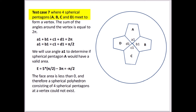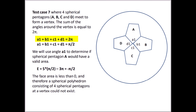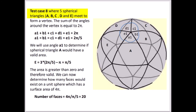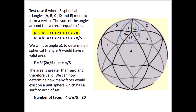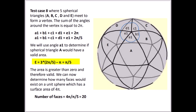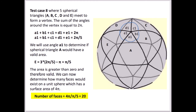For test case 7, four spherical pentagons meet at a vertex with angles summing to 2π, and the internal angle computes to π/2. The computed area of the spherical pentagon results in −π/2, indicating this is not a valid configuration. For test case 8, five spherical triangles meet at a vertex where the sum of the angles equals 2π, and the internal angles compute to 2π/5. The area of the spherical triangle results in π/5 — a valid area. Knowing the sphere's area is 4π, it would require 20 spherical triangles to partition the sphere, corresponding to a spherical icosahedron.